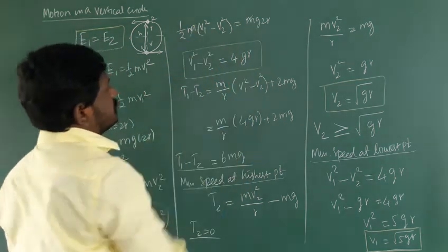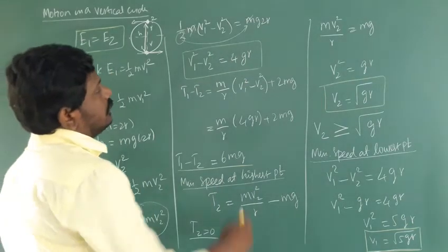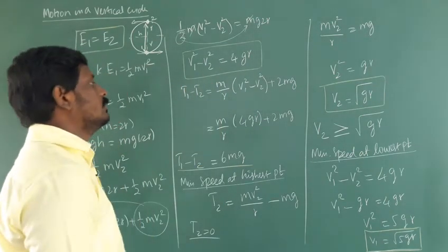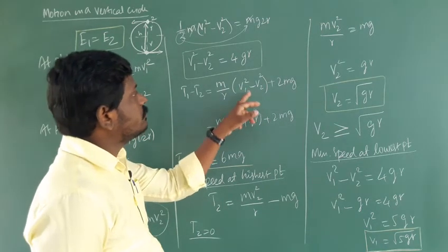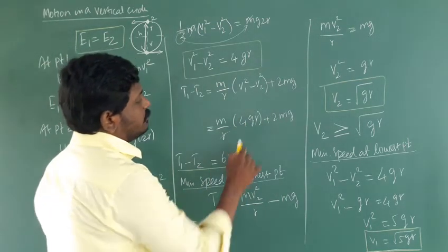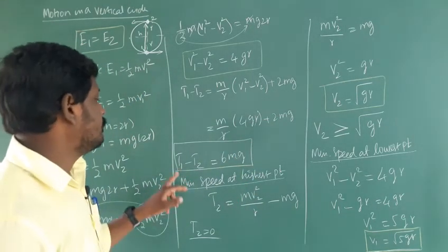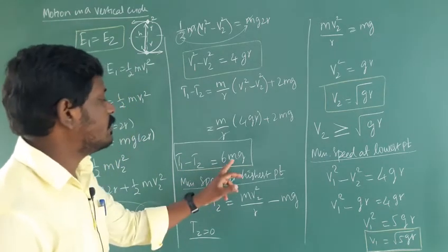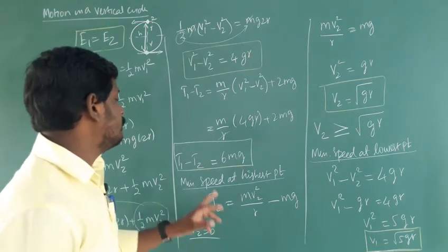The masses cancel and the 2 moves to the right-hand side giving 2 times 2 equals 4, so V1 squared minus V2 squared equals 4gr. Now, T1 minus T2 equals M over R times (V1 squared minus V2 squared). Substituting 4gr, the R cancels and we get 4mg plus 2mg equals 6mg. So T1 minus T2, the difference in tension between the lowest and highest points, equals 6mg.